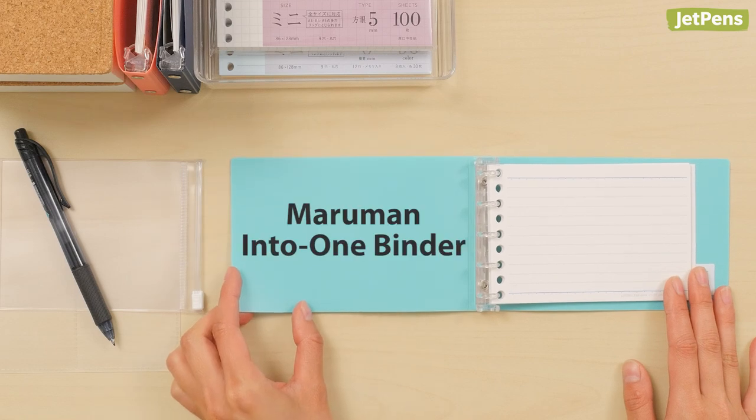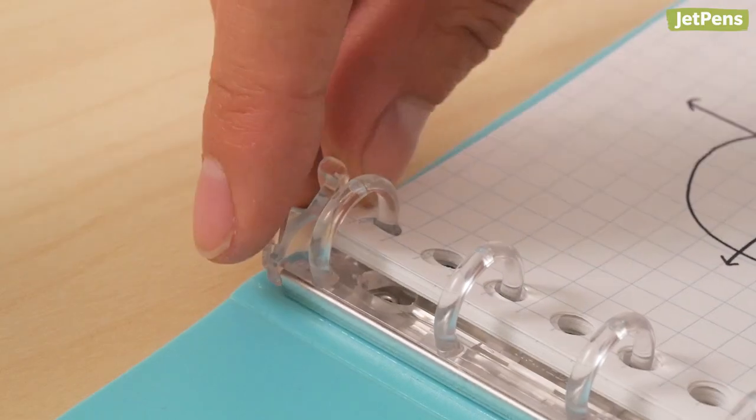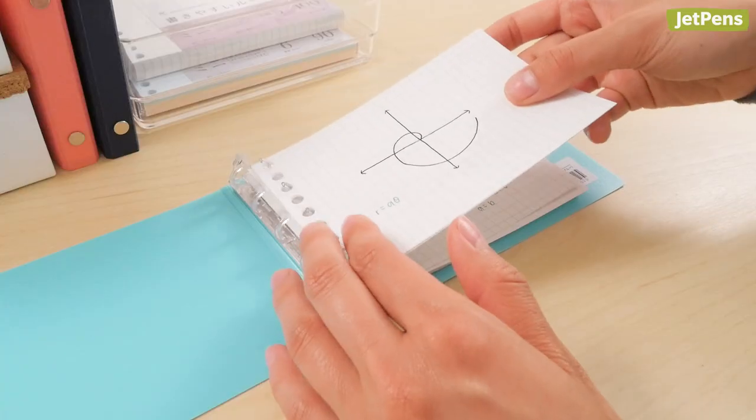The Maruman into one binder is ideal for small papers like flashcards or index cards for speeches. To open the rings, just pinch the buttons above and below the rings.